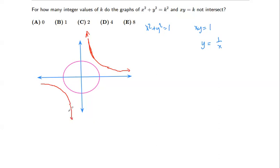I'll draw the other branch as well — it looks like this. Since xy equals one, if I choose x equals one then y equals one. So we're working with the unit circle: this is one, one, negative one. The key point on the hyperbola is at (1, 1), and the other is at (−1, −1).